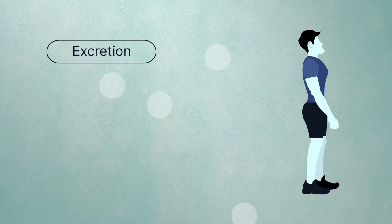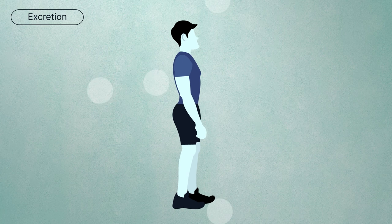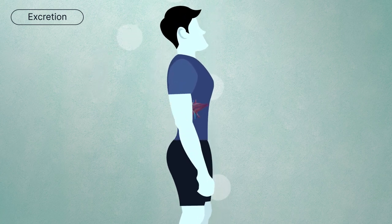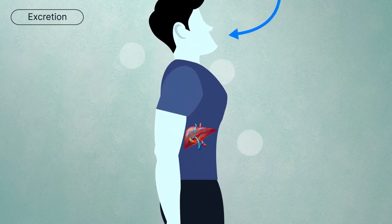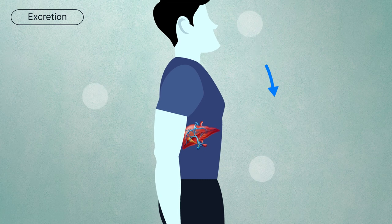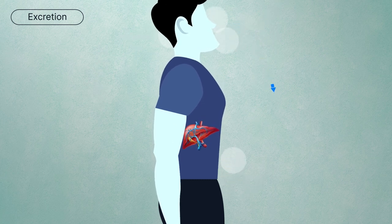Excretion. Finally, the drug and its metabolites are excreted from the body through the kidneys, liver or even in breath and sweat. The rate of excretion influences how long the drug remains active in the system.